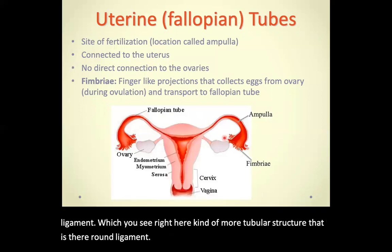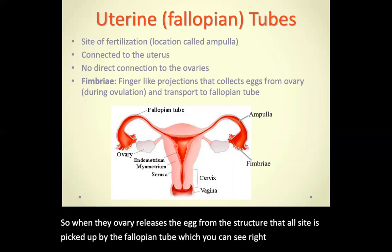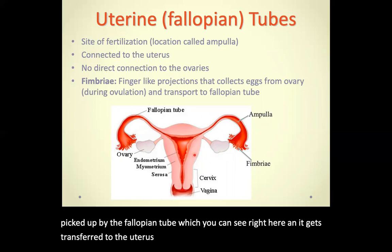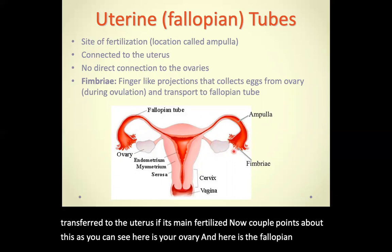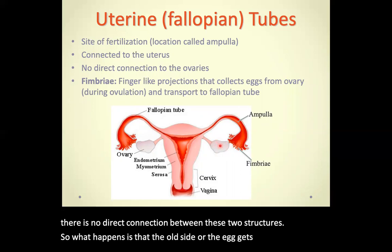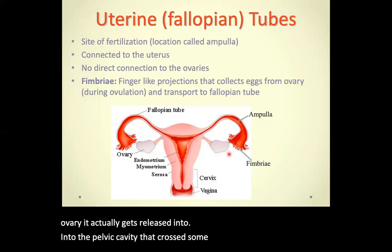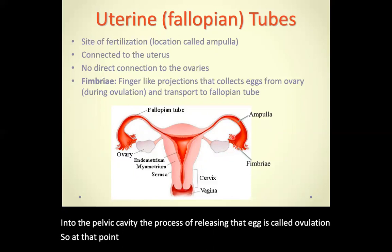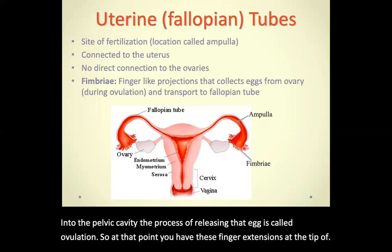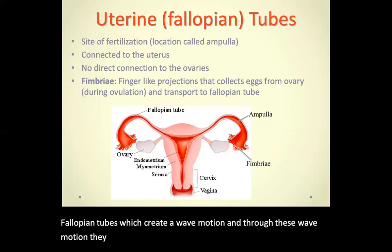When the ovary releases the egg, that oocyte is picked up by the fallopian tube and transferred to the uterus if it has been fertilized. There is no direct connection between the ovary and the fallopian tube. The oocyte gets released into the pelvic cavity — this process is called ovulation. At that point, finger-like extensions at the tip of the fallopian tubes create a wave motion and grab the egg, bringing it into the fallopian tube.